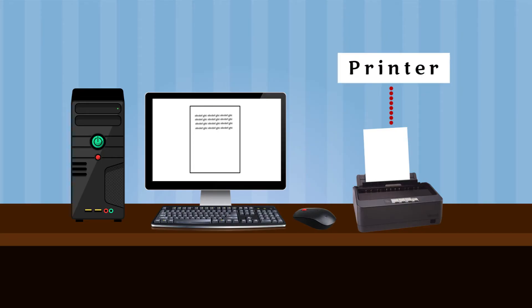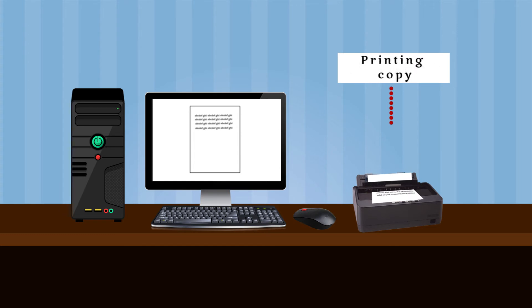Printer: A printer takes what is shown on the computer screen and prints it out onto a paper sheet. This printed output is called a hard copy.